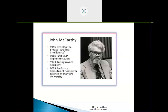Here is the person John McCarthy. In 1955 he developed the phrase 'artificial intelligence,' which got popularity in 1956. In 1960 he implemented the first LISP processor, which uses linked data structures. In 1971 he received the Turing Award. In 2001 he became professor emeritus of computer science at Stanford University. He is a very important person, known as the father of artificial intelligence.